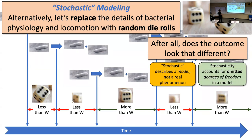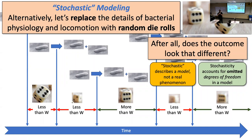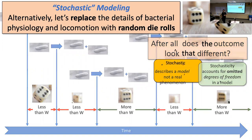Stochastic modeling describes a model, not a real phenomenon. It accounts for omitted degrees of freedom — all the details left out are replaced with randomness. Instead of a hundred variables, we might only need two parameters like mean and variance. This makes our models more generalizable, stronger, and easier to interpret and understand.